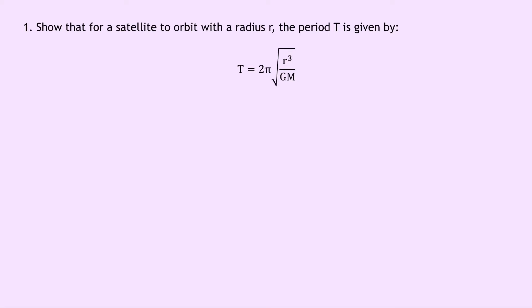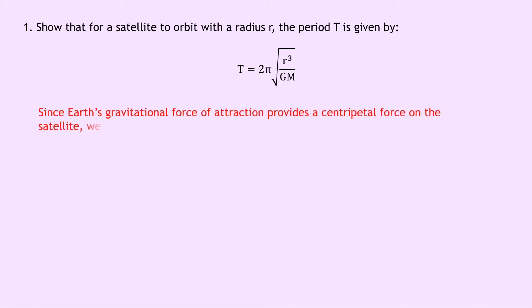Question 1 is a show-that question, and it says to show that for a satellite to orbit with a radius r, the period T is given by T equals 2π times the square root of r cubed over GM. Well, remember for satellites, since Earth's gravitational force of attraction provides a centripetal force on the satellite, we can write that Fg is equal to Fc, i.e. the gravitational force is equal to the centripetal force. So writing down our two expressions for that, we get GMm over r squared is equal to mv squared over r.